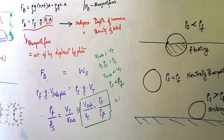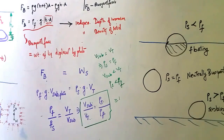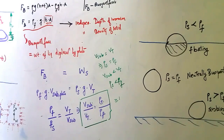Buoyancy effects in gases are also important — not only in liquids. One example is the vertical rise of a helium balloon. Another example is air movements in the atmosphere. Archimedes' principle is also applied in modern geology, considering the continents to be floating on a sea of magma — consistent with continental drift theory.